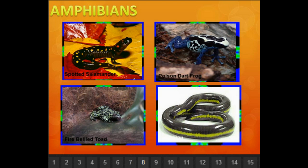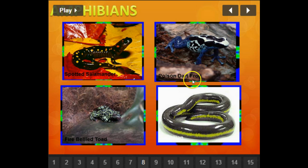These are a couple of different amphibians: the spotted salamander, the poison dart frog, and the fire-bellied toad.